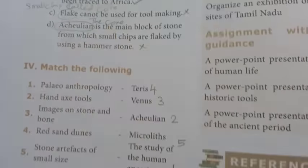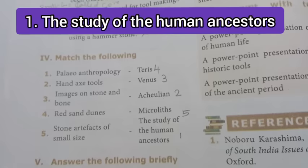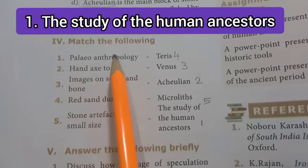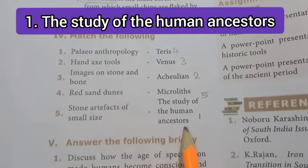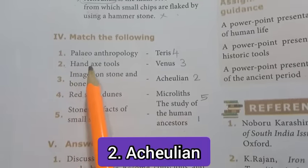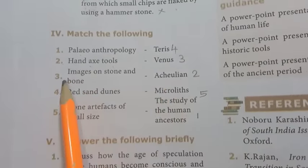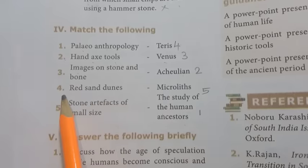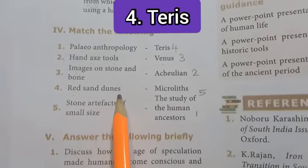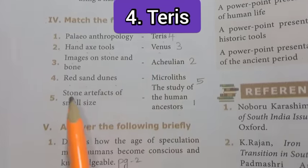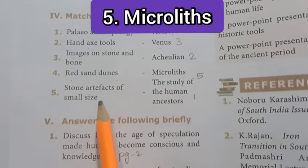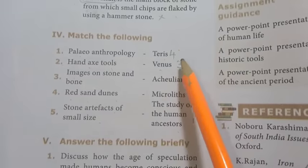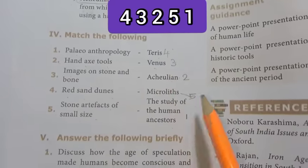Moving to Roman numeral IV, Match the following. First: Paleoanthropology - human ancestors. Second: Hand axe tools - Acheulian. Third: Images on stone and bone - Venus. Fourth: Red sand dunes - Terries. Fifth: Stone artifacts of small size - Microliths. So the matching order is 4, 3, 2, 5, 1.